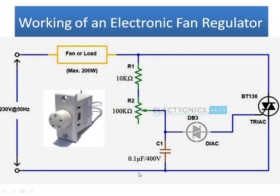Through the knob we are adjusting the time constant for charging the capacitor. The greater the resistance set by the knob, the less current flows to the capacitor, the longer it takes to charge — this is the RC time constant. The more time it takes to charge, the more time it takes to discharge, so the TRIAC firing pulses become very low, and the fan speed drops.